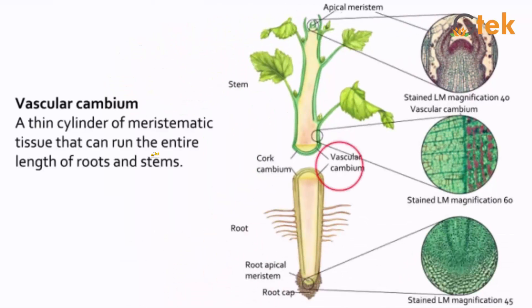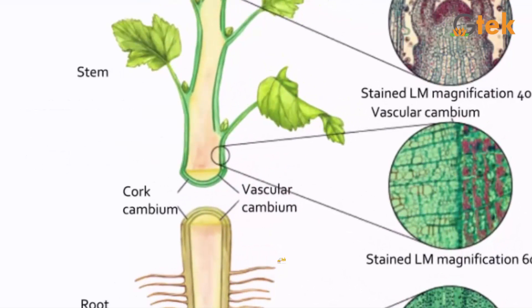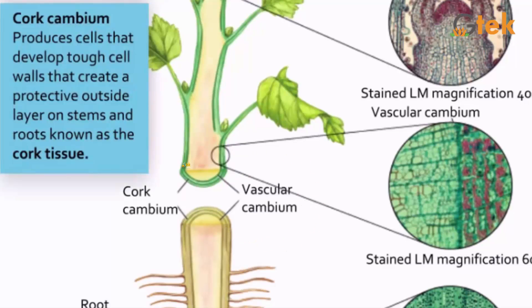The vascular cambium is a thin cylinder of meristematic tissue that runs the entire length of roots and stems. You can see the vascular cambium here. The cork cambium produces cells that develop tough cell walls, creating a protective outside layer on stems and roots, known as cork tissue.